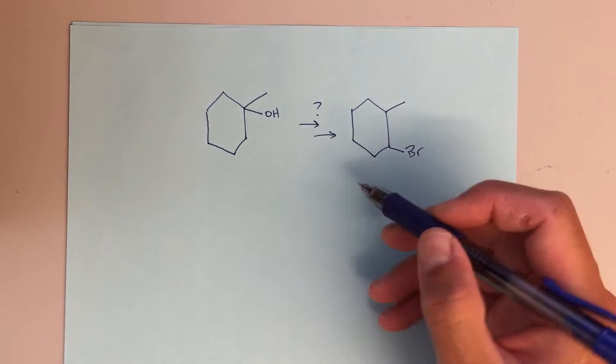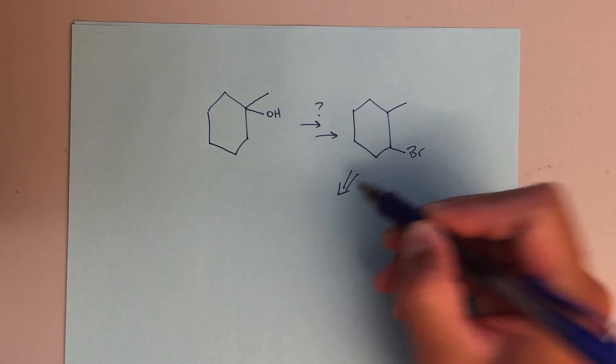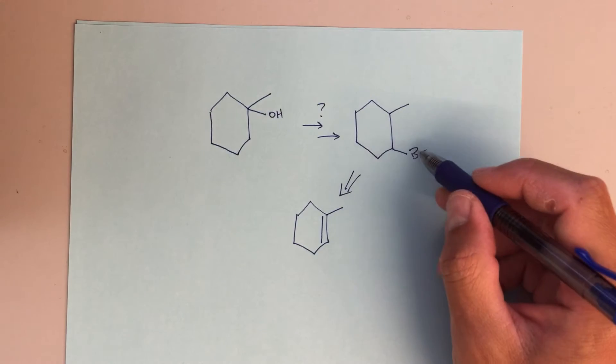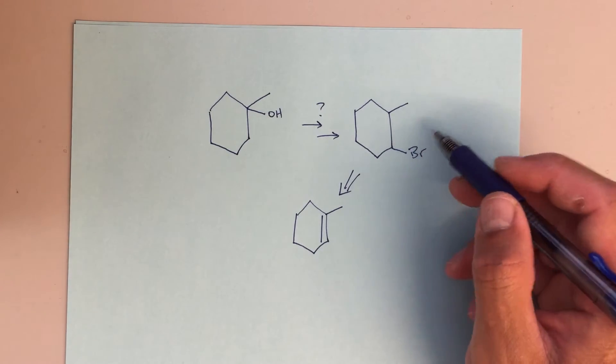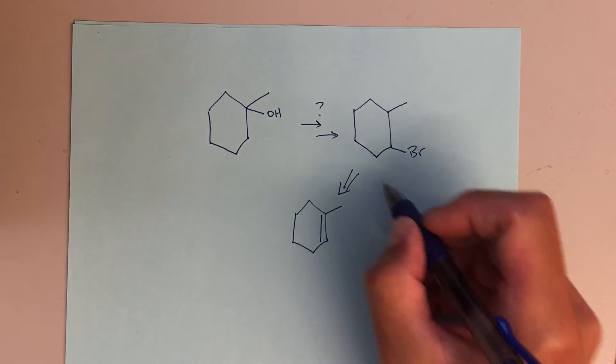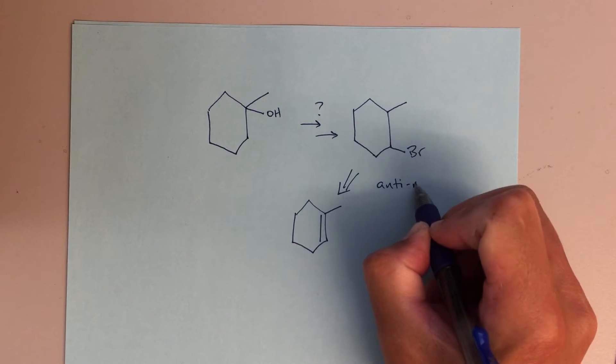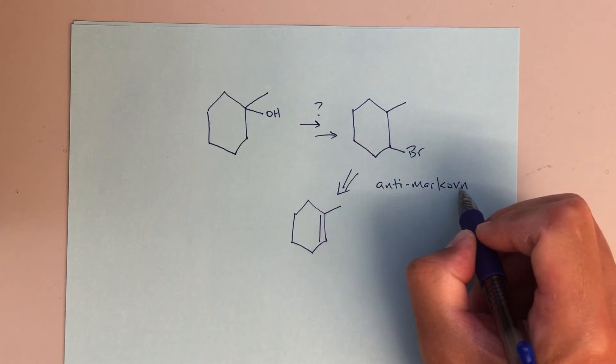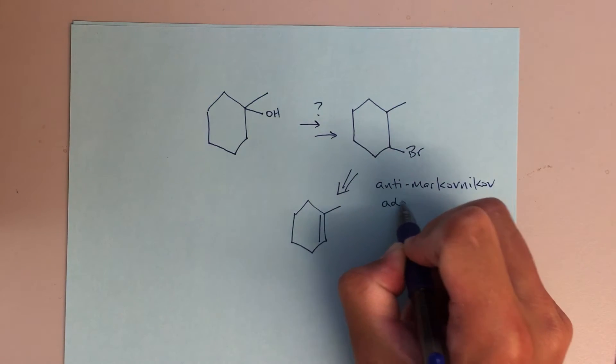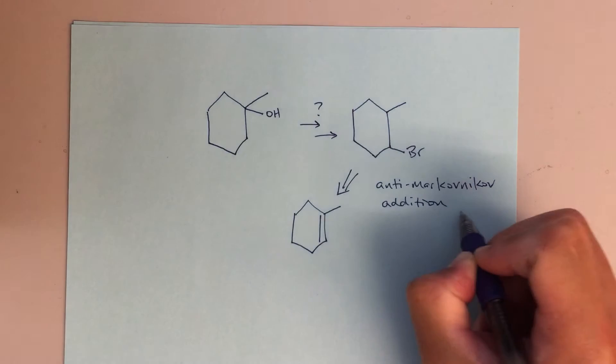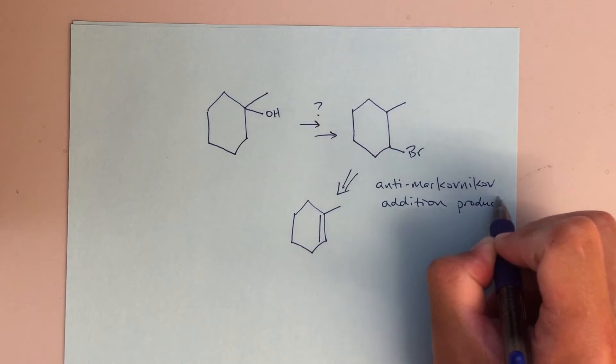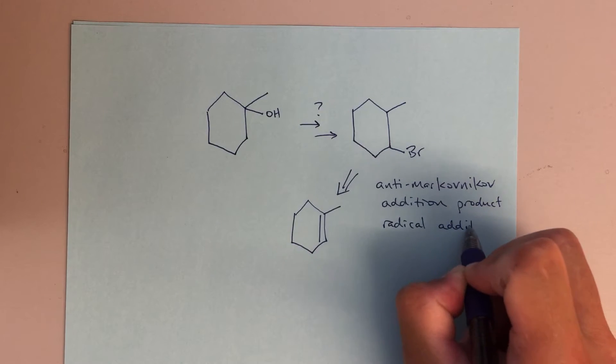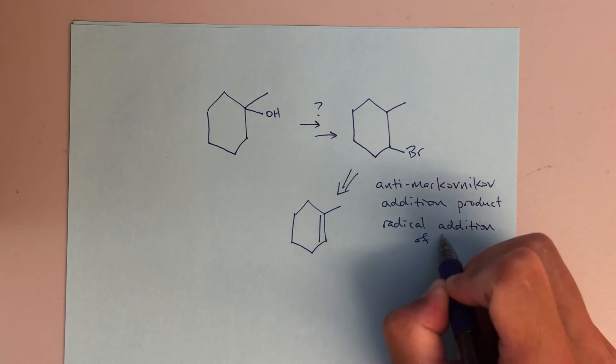In my mind, we talked about in class today forming the anti-Markovnikov product of addition, HBr, from an alkene. So here we've got the anti-Markovnikov addition product, and we do that by doing a radical addition of HBr.